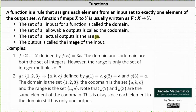Let's look at some examples of functions. First, we have the function f which maps the set of integers to the set of integers, defined by f of n equals 3n. The domain, indicated by the first Z, and the codomain, indicated by the second Z, are both the set of integers.